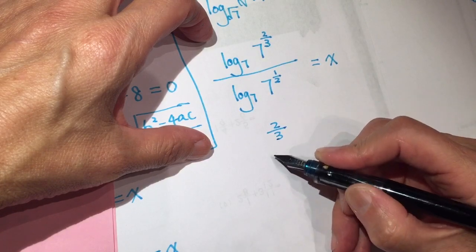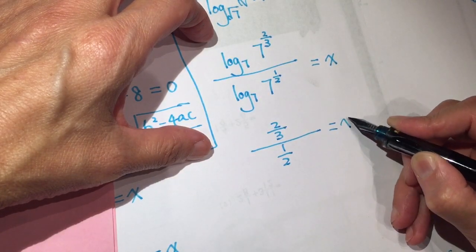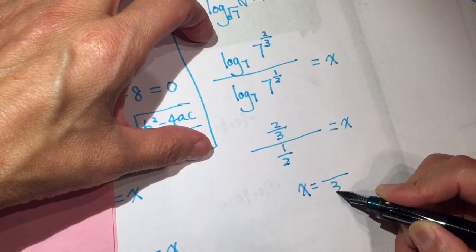So log 7, 2/3 divided by 1/2 equals X. X equals 4/3.